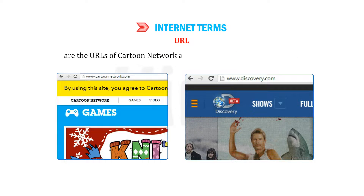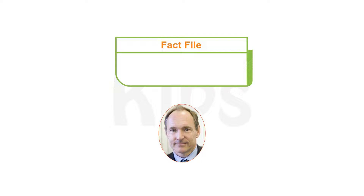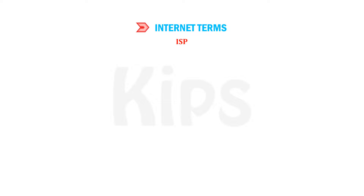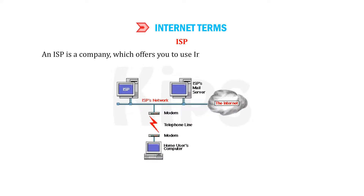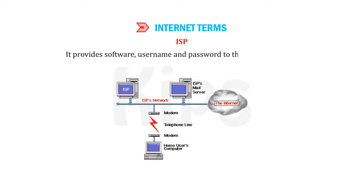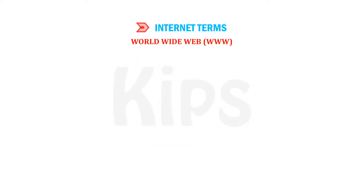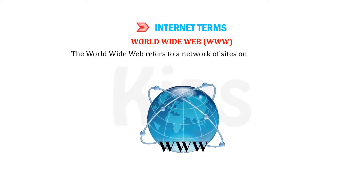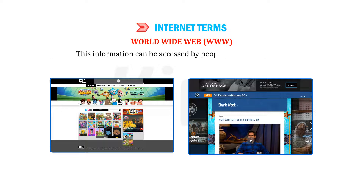Who is he? He is Tim Berners-Lee, the founder of the World Wide Web. ISP stands for Internet Service Provider. An ISP is a company which offers you internet access in exchange for a monthly fee. It provides software, a username, and a password to the user in order to get connected to the internet. World Wide Web (WWW): The World Wide Web refers to a network of sites on the internet which contains information in the form of text, pictures, animation, and videos. This information can be accessed by people all over the world.